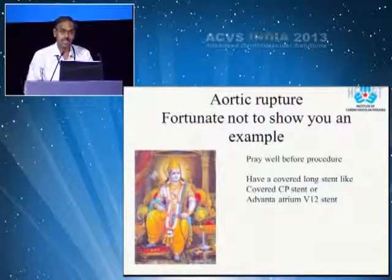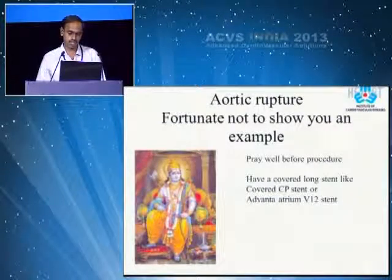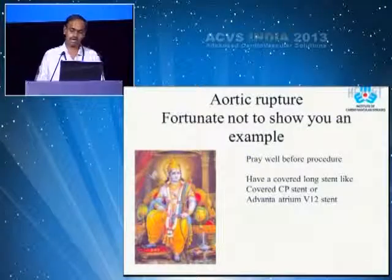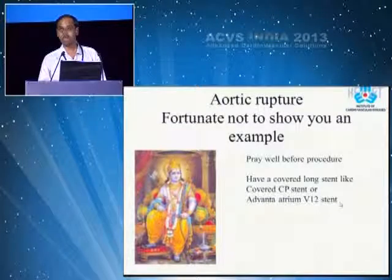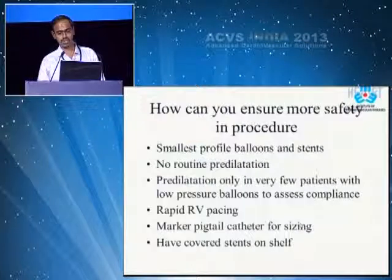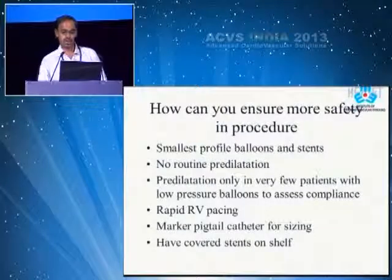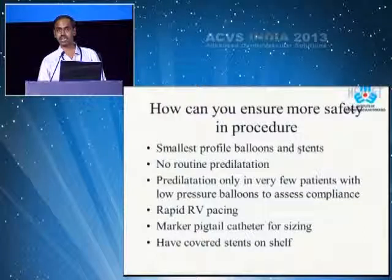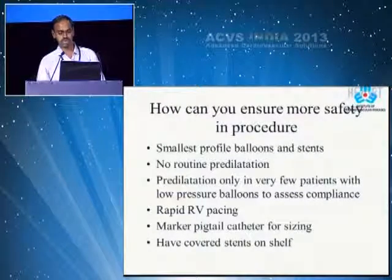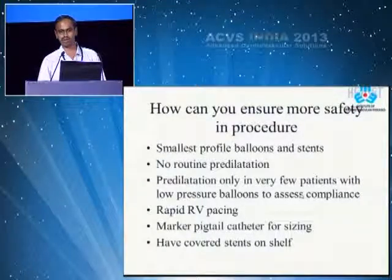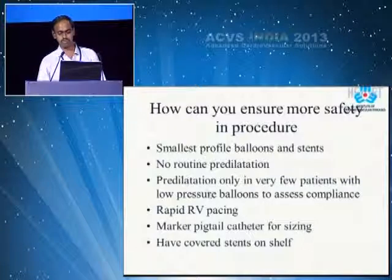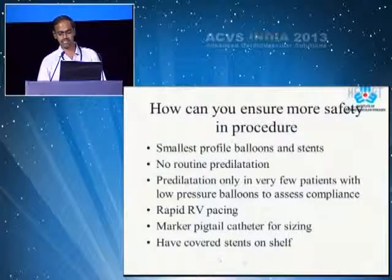Aortic rupture is another dreaded complication. Always keep a covered stent on the shelf — either a covered CP or an Advanta atrium V12. To ensure more safety: use the smallest profile balloon and stents, as large sheaths can cause large retroperitoneal hematomas. No routine pre-dilatation, but predilate if needed with a low-pressure balloon to assess compliance. If the compliance of the lesion is not very good, you can predilate with a Tyshak 2 balloon.